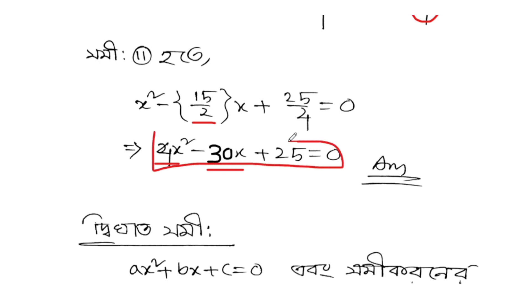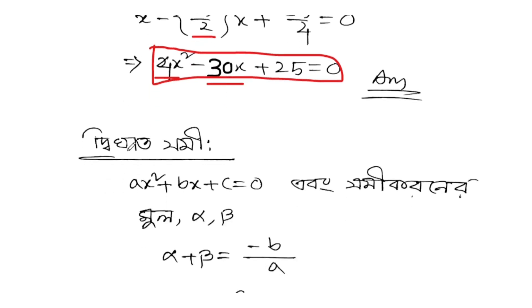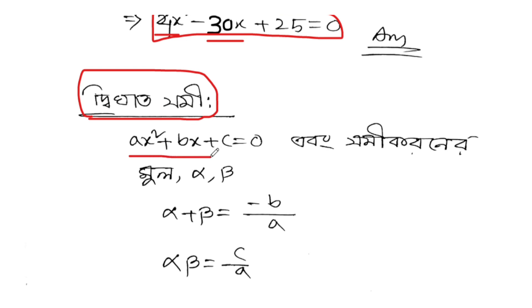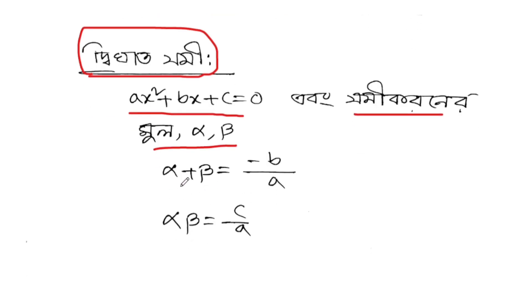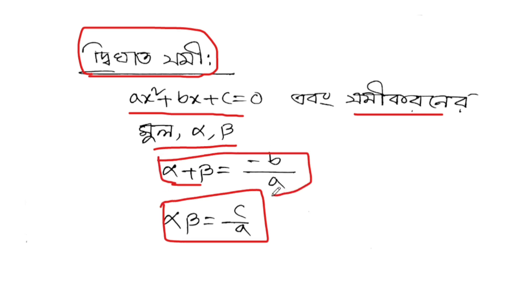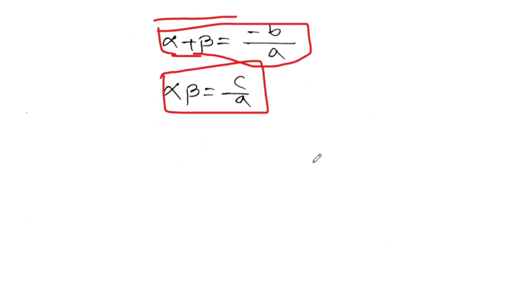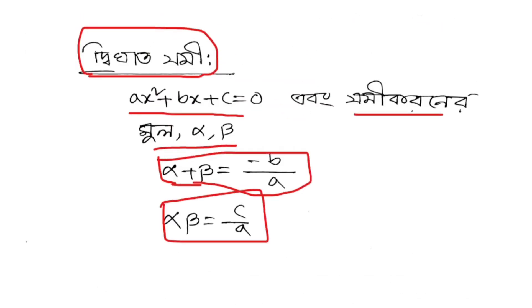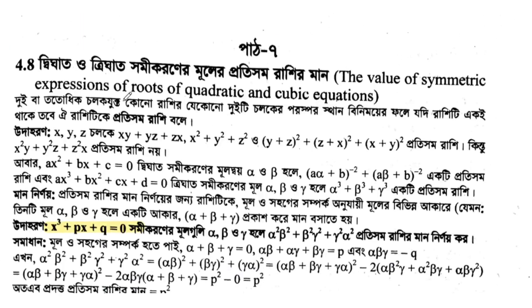Finally, we have the complete equation. For the equation ax² + bx + c = 0 with roots alpha and beta, we use: alpha plus beta = -b/a and alpha times beta = c/a. This forms the foundation for the next tutorial where more topics will be covered. Thank you for watching.